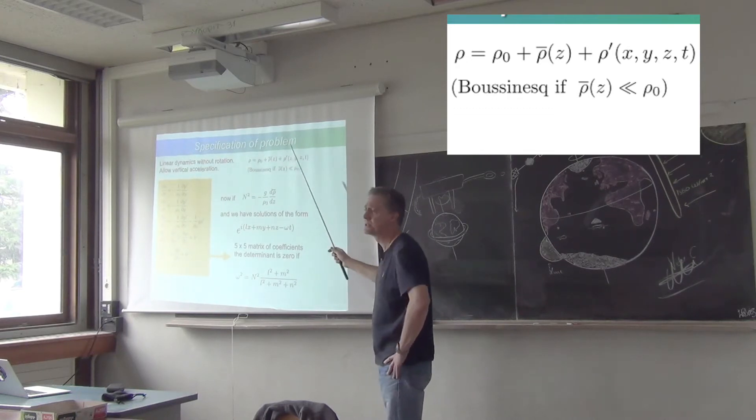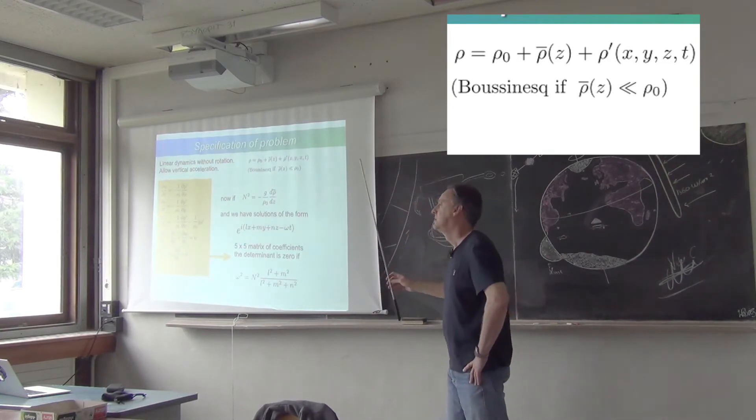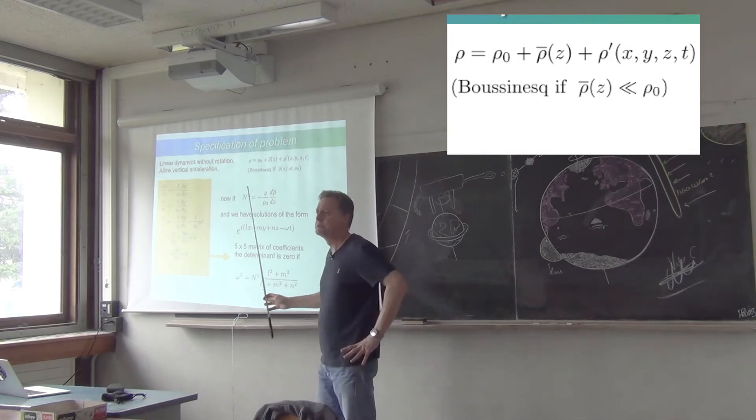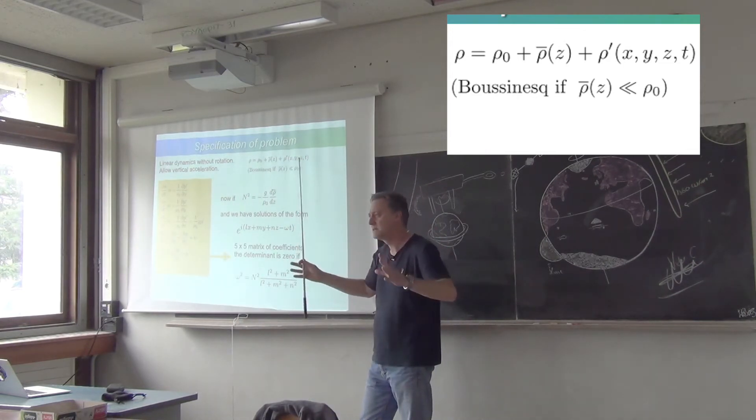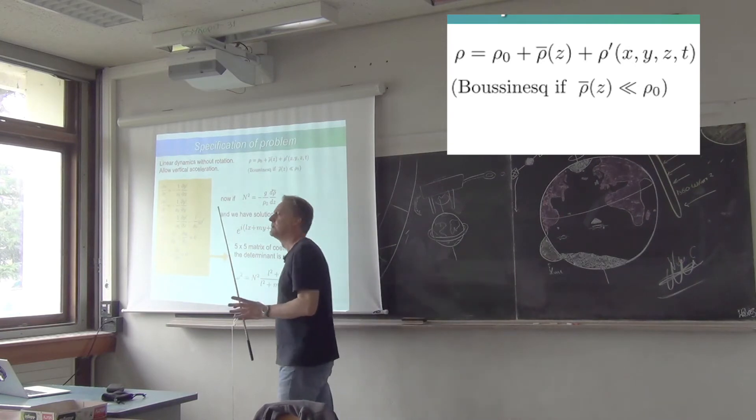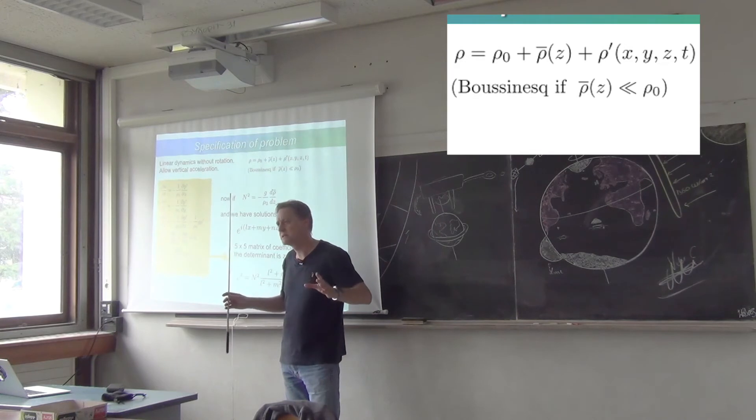If it isn't, if it's quite important, then it's called an anelastic fluid. Generally speaking, the ocean is a very good Boussinesq fluid. The vertical variations of density are quite small compared to the density. The atmosphere is not. Vertical variations of density in the atmosphere are order one compared to the density of air.